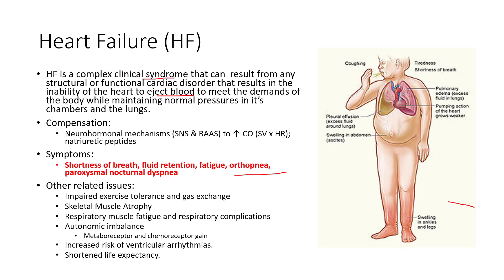Quite often we also see impaired exercise tolerance and impaired gas exchange — we'll get into that. Skeletal muscle atrophy: there are actually profound changes that happen in the muscle. Autonomic imbalances — there are metaboreceptor and chemoreceptor gain changes as well. A high risk of ventricular arrhythmia, because anytime we have a structural change to the heart, we can end up having changes to the conduction system, and that happens in heart failure too.